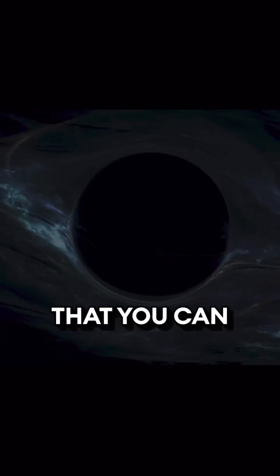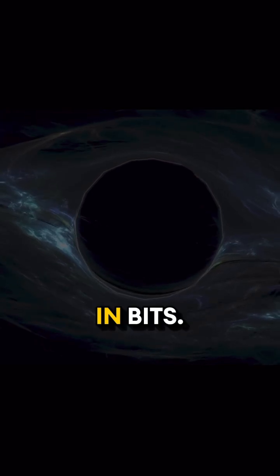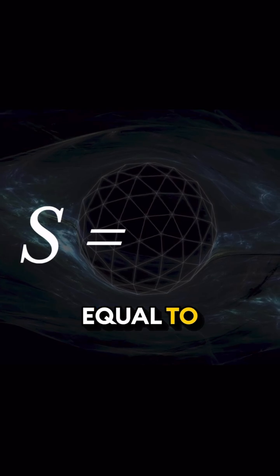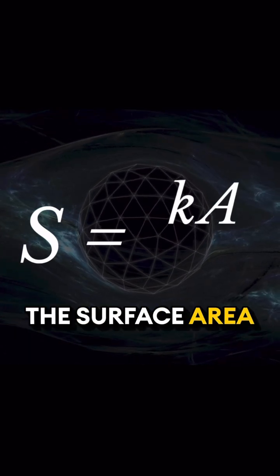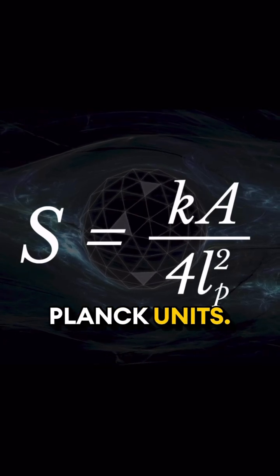Well, it turns out that you can calculate that a black hole stores in bits. The information content is equal to the surface area of the event horizon in square Planck units.